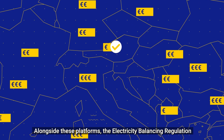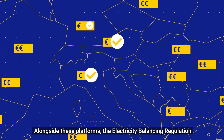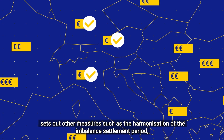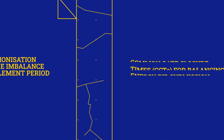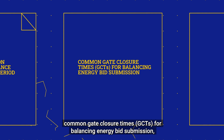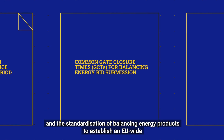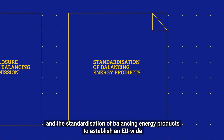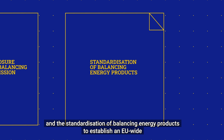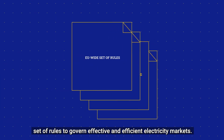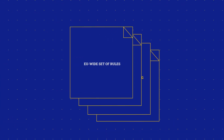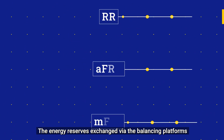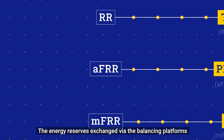Alongside these platforms, the Electricity Balancing Regulation sets out other measures such as the harmonisation of the imbalance settlement period, common gate closure times for balancing energy bid submission, and the standardisation of balancing energy products to establish an EU-wide set of rules to govern effective and efficient electricity markets.